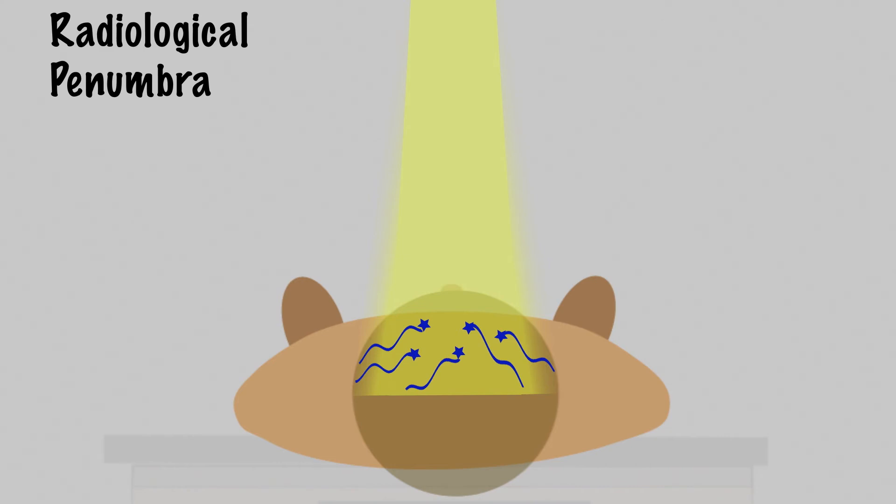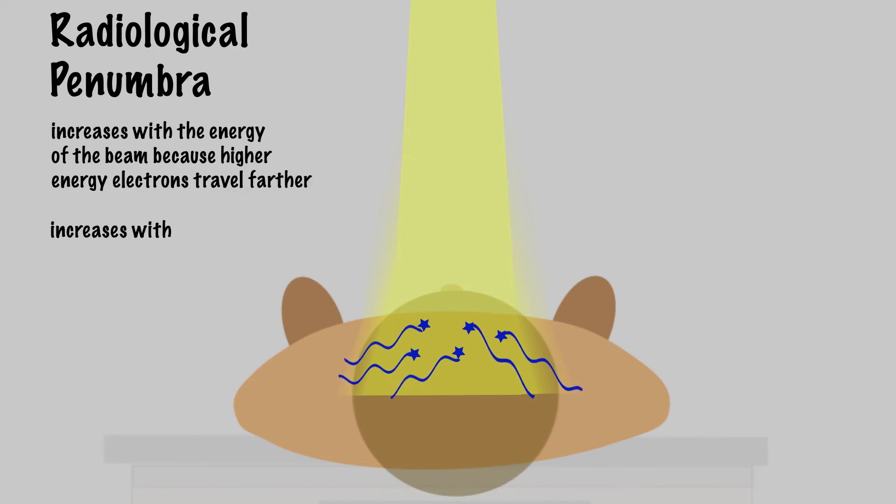Radiological penumbra width increases with the energy of the beam because higher energy electrons travel farther. It also increases in lower density material, for example in lung, because electrons will travel farther. It's all about the range of these electrons.